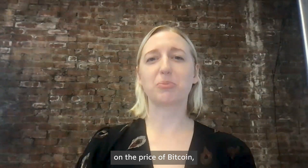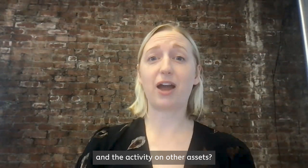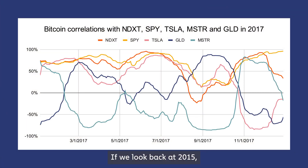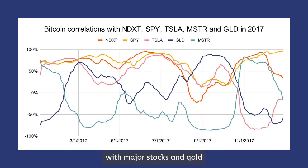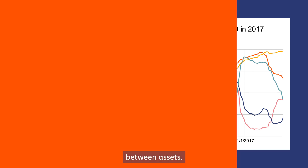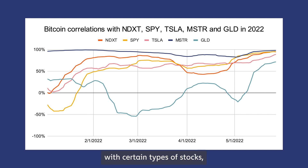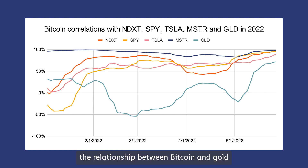How severe was the impact on the price of Bitcoin, the markets more broadly, and the activity on other assets? First let's take a step back. If we look back at 2015, we can see Bitcoin's price was essentially uncorrelated with major stocks. These correlation waves show Bitcoin's price at times was extremely correlated with major stocks and gold, and at times not. This behavior is typical of essentially no significant relationship between assets. Fast forward to 2022, and we have a totally different ecosystem. Not only is the relationship between Bitcoin and stocks less volatile, but the correlations are consistently higher with certain types of stocks, including tech stocks and SPY. The relationship between Bitcoin and gold has not stabilized. Bitcoin moves with the stock market in 2022.